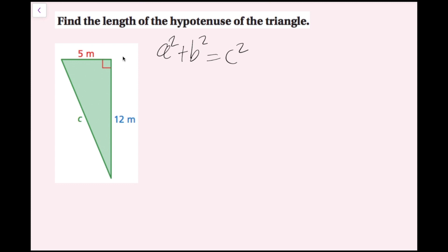Now I'm going to plug my values in. I know that I have 5 for one of my legs and 12 for one of my legs, and it doesn't matter which one I plug in because the order of addition doesn't matter. I can plug either one in for A or B. I'm going to plug in 5 first, so I'll do 5 squared plus 12 squared equals C squared.